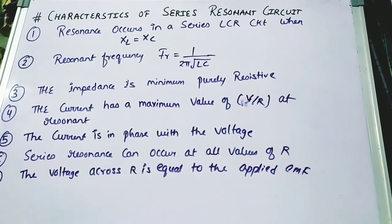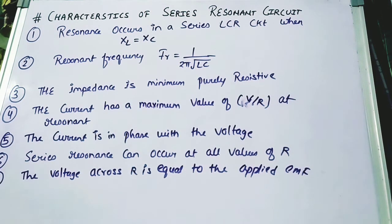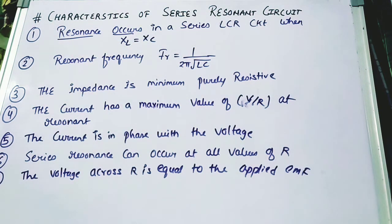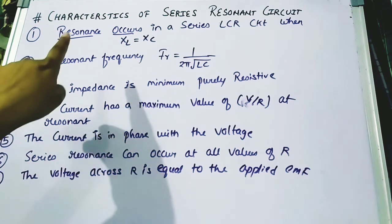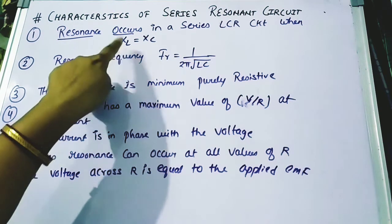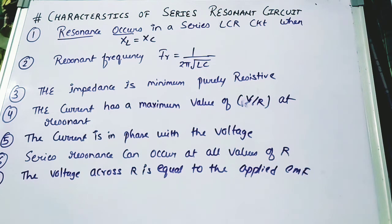Now we discuss the characteristics of the series resonance circuit. First, resonance occurs when inductive reactance equals capacitive reactance. The resonance frequency is FR = 1/(2π√LC). At resonance, the impedance is minimum — because when current is maximum, resistance is effectively at its lowest — so the circuit behaves as a purely resistive circuit.